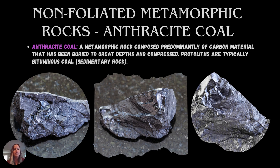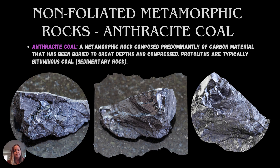The last non-foliated rock here is anthracite coal. Anthracite coal is made up predominantly of carbon materials, coming from the original protolith which would be bituminous coal — a sedimentary rock. Bituminous coal is really low density and has a lot of packed carbon, and anthracite is further packed carbon, so it gets even shinier and even denser. It can be really hard to tell the difference between bituminous coal and anthracite coal, but technically anthracite is further altered bituminous coal.